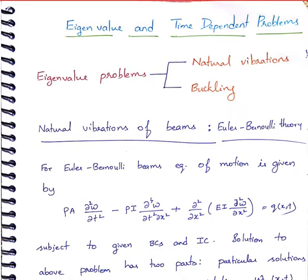Next, we are going to look at dynamic analysis problems. For dynamics analysis, we are once again going to start with 1D. Whenever we talk about dynamics, broadly speaking there are two kinds of problems: one is called eigenvalue analysis problems and the second is purely time-dependent problems. In eigenvalue analysis, we have two types of problems.